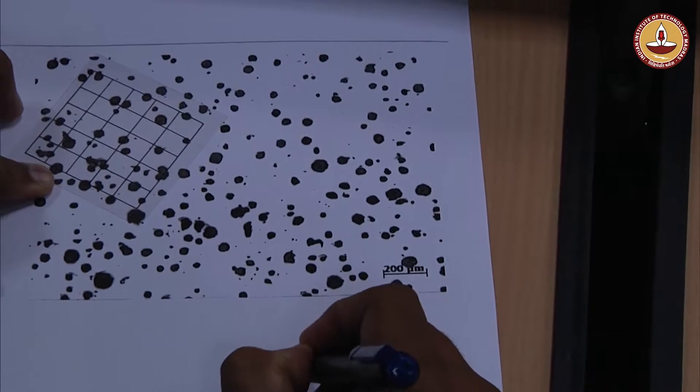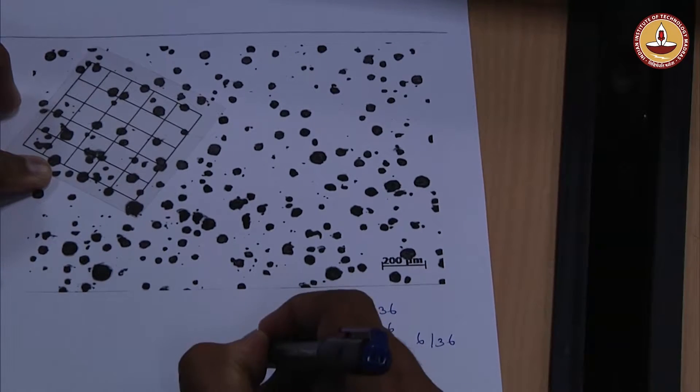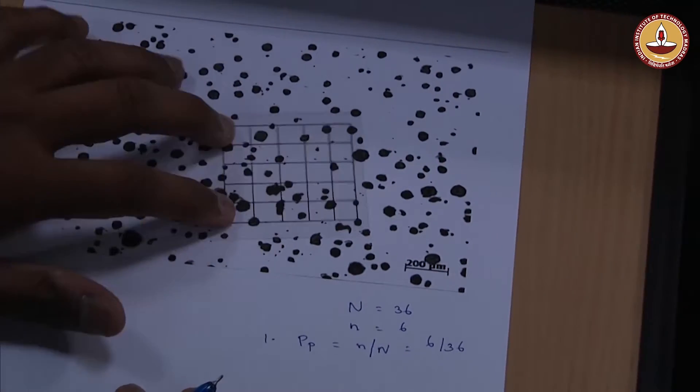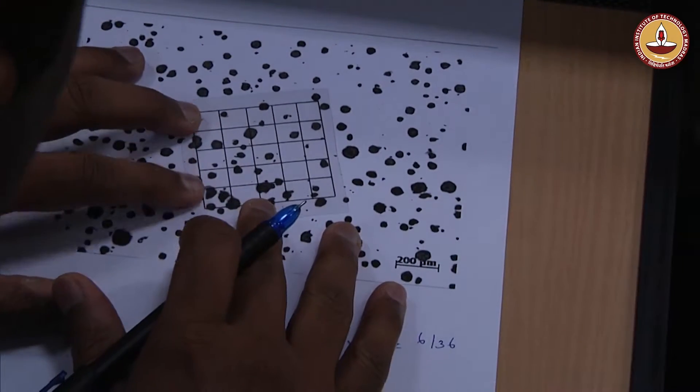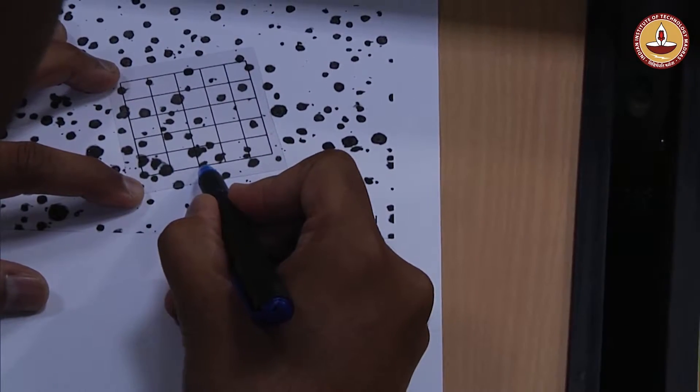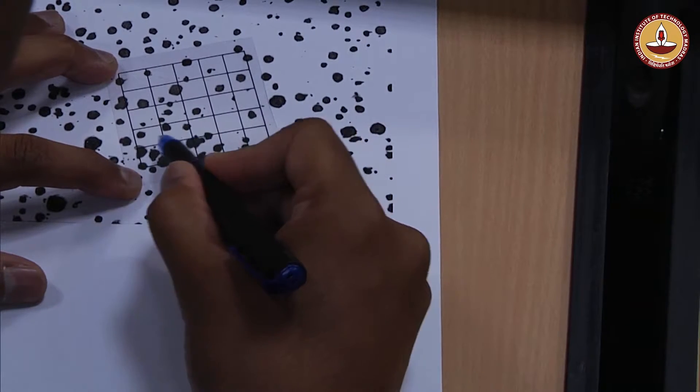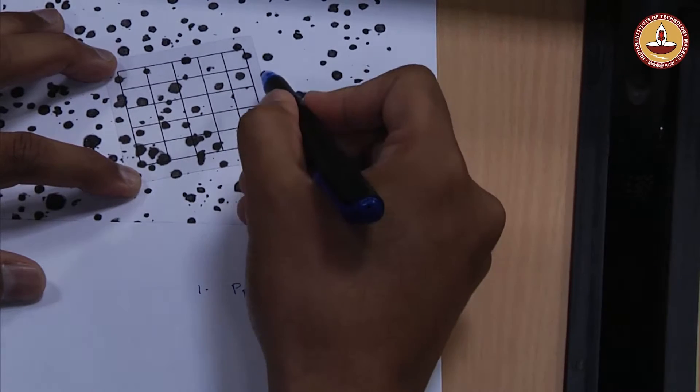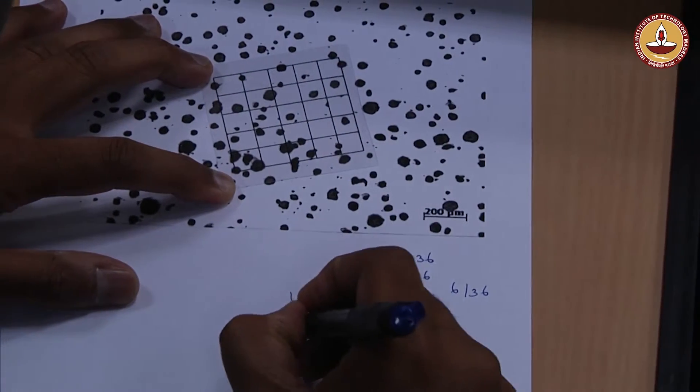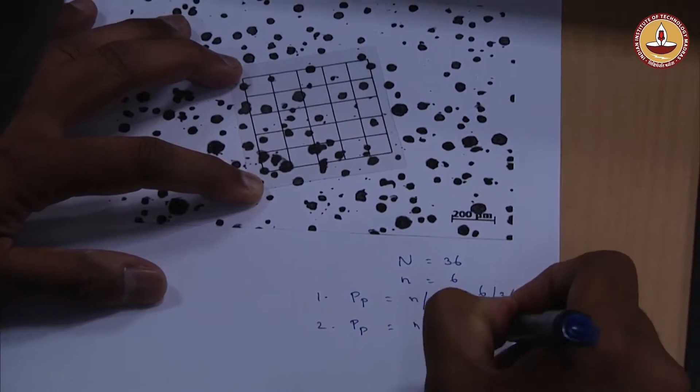Let me start counting: this is 1, half, 2 and half, 4, 4 and half, 5, and then 6. This small n for this count is 6. I will have PP equal to small n by capital N, that is 6 by 36. Now I will put this probe into a different area in a different random orientation. Let us start counting again. This is 1, this is half, this is half, 2, and then half, 2 and half, and then 3 and half, 4 and half. This is 4.5 by 36.